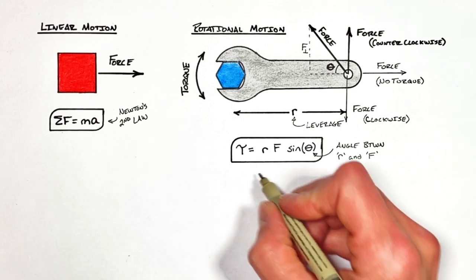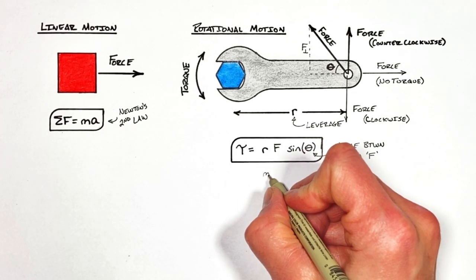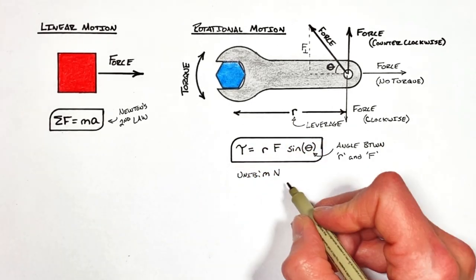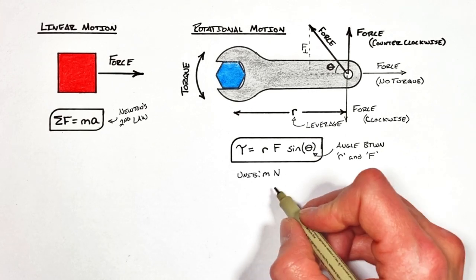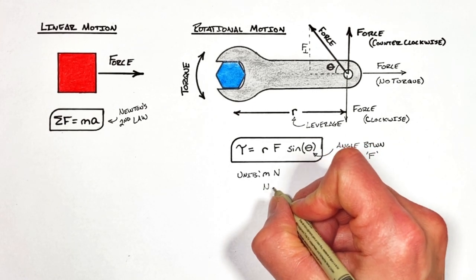And this leads us to units. Torque is given by a radius, which is measured in meters, multiplied by a force, which is measured in Newtons. And in physics that's all well and good. For you engineers out there, you'll typically see this referred to as a Newton meter.